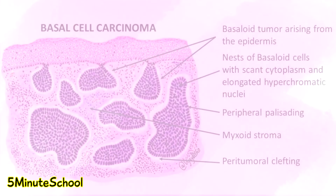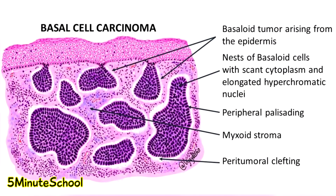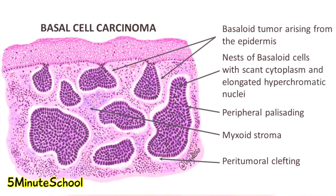Looking at the histopathology of basal cell carcinomas, we can see basophilic uniform hyperchromatic cells clumped together in nests in the dermis and subcutis. This is one of the things that a pathologist will look for when analyzing biopsy samples of suspected lesions.